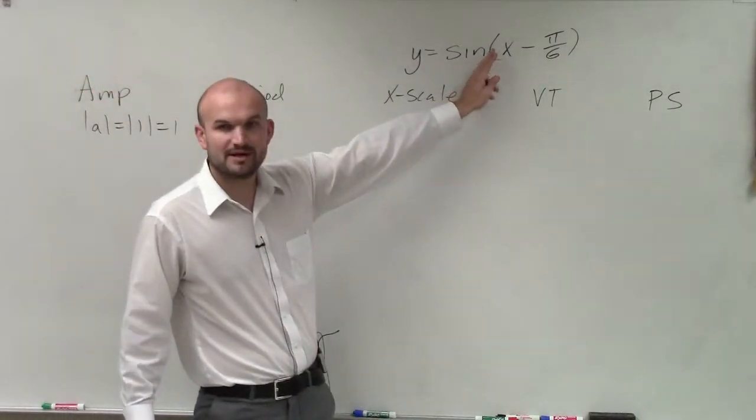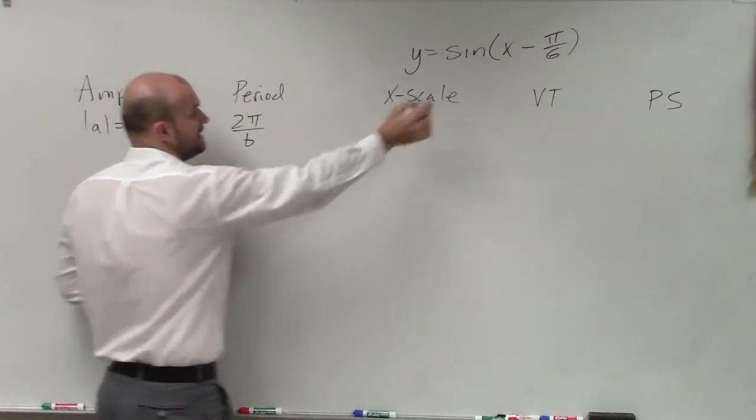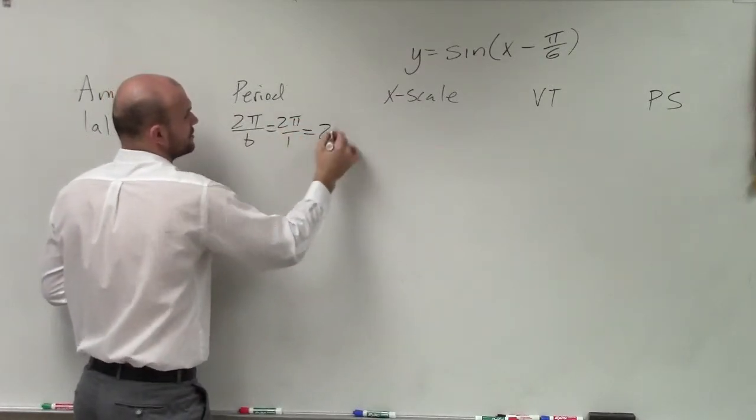The period. Remember, period is going to be 2 pi divided by b. Well, in this case, my b is 1, because 1 is multiplied by x. So 2 pi divided by 1 equals 2 pi.